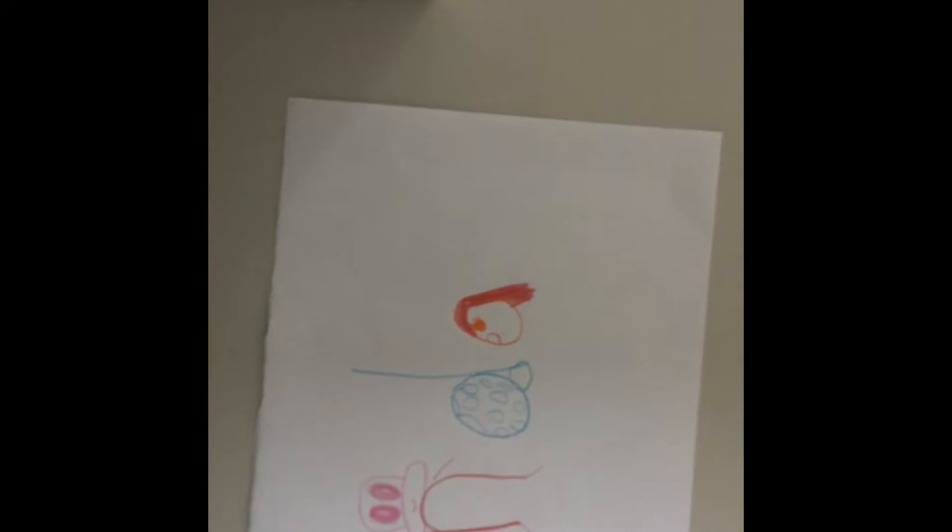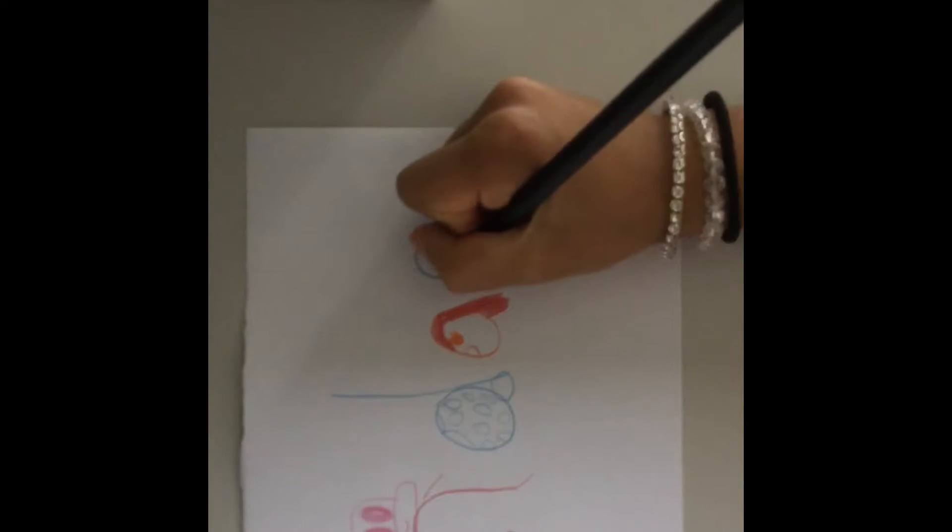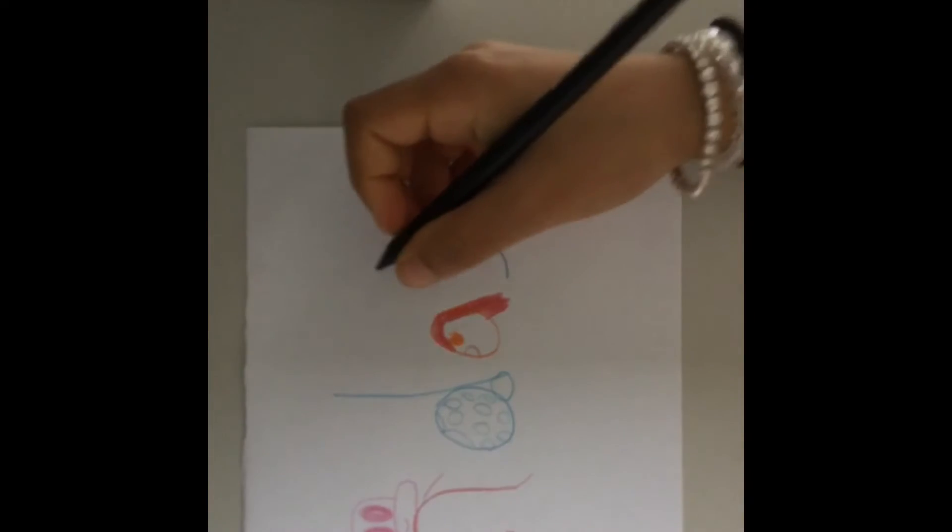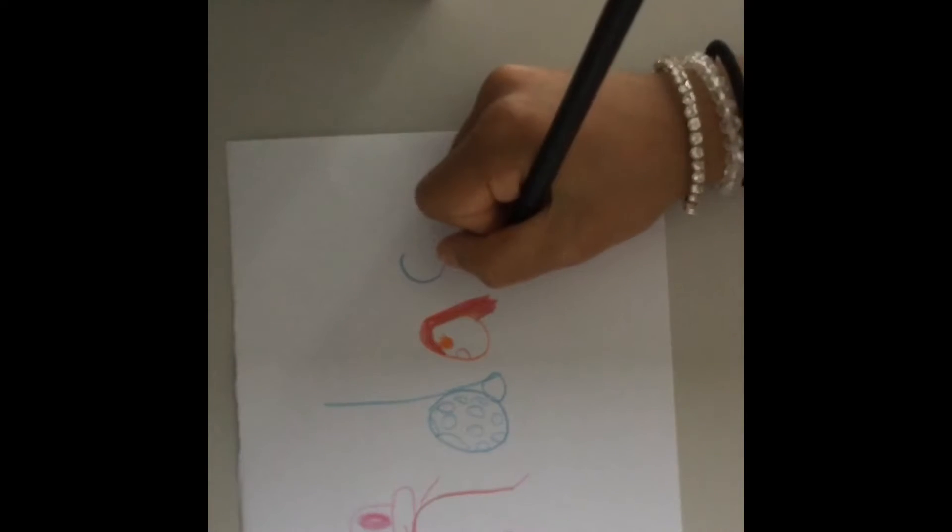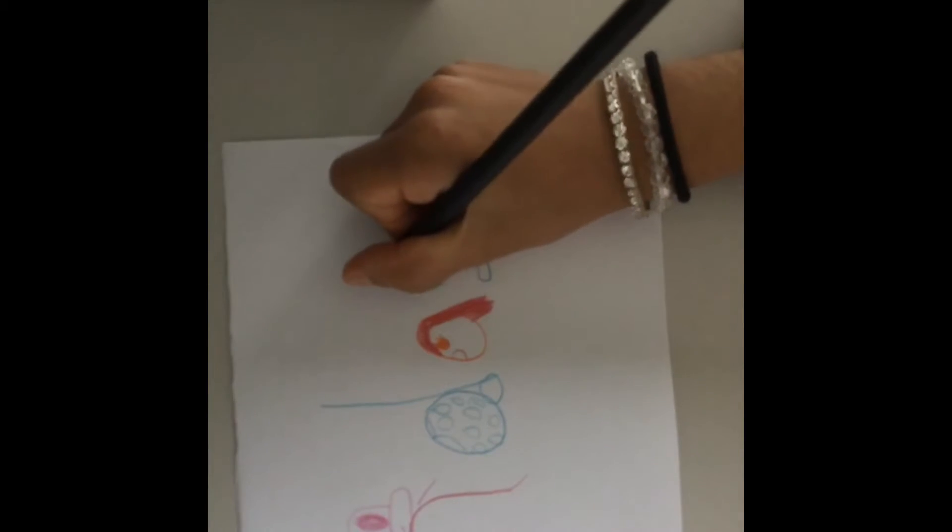Then take the color purple and draw another S. It's not purple, it's dark blue, and make it like a worm or a snake.